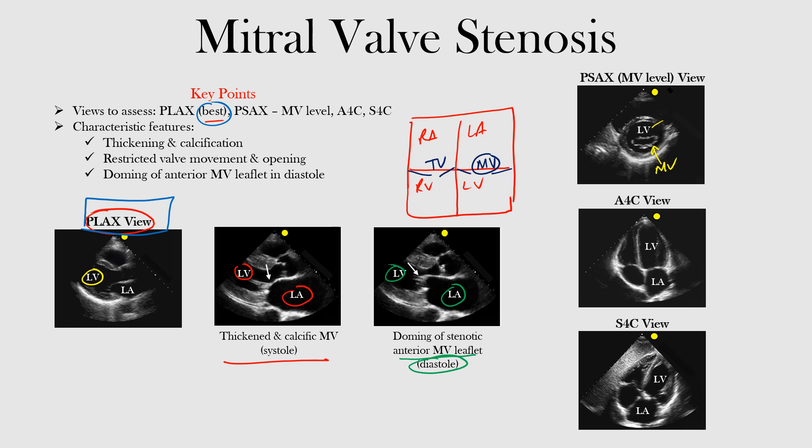The other views where we can assess the mitral valve are the apical four chamber view and the subcostal four chamber view. In the apical four chamber view, here's your left atrium and left ventricle, and the mitral valve is on the left side between them. We're looking for any restricted movement in real time — is it opening well, is the movement restricted, and is there any thickening or calcification of the valve?